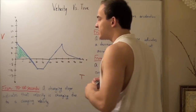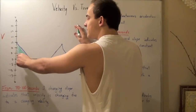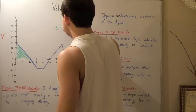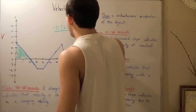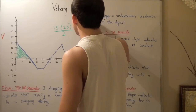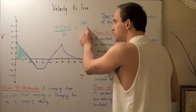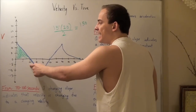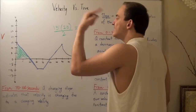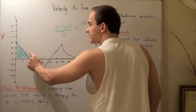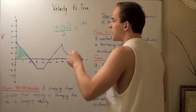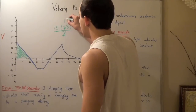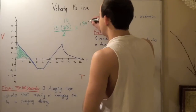To find the displacement, since this is a triangle, we use base times height divided by 2. So 15 multiplied by 20 divided by 2 gives us 150 meters. Therefore the object displaces 150 meters from time equals zero to time equals 20 seconds. In this case, distance and displacement mean the same thing, giving us 150 meters.